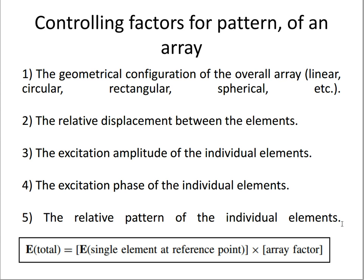The fifth controlling factor is the relative pattern of the individual element, from which you can control the total pattern of your system. The total electric field of an array is equal to the electric field of a single element at a reference point multiplied by the array factor. So you can control the total pattern with the help of the array factor. If you choose a single element, its electric field is constant, so the controlling factor is the array factor.